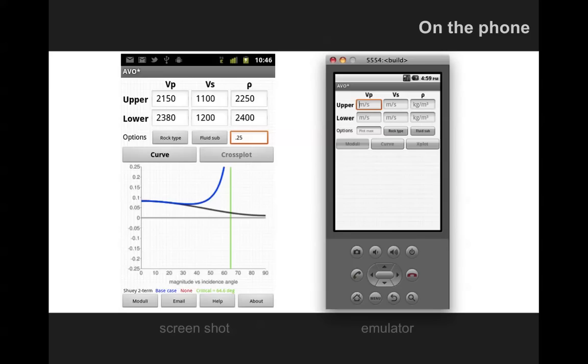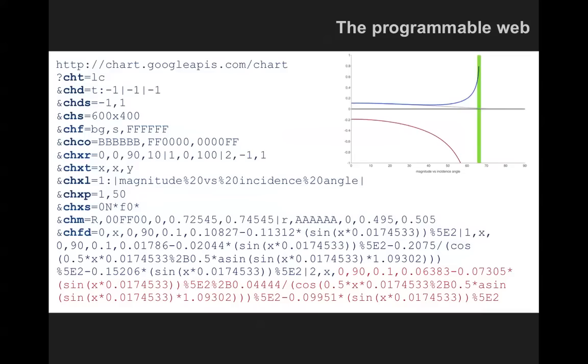Here's another of our apps, AVO, takes some rock properties, and it makes a plot of the reflectivity with offset. It's a pretty simple little app, but drawing the graph was tricky for us. We didn't know how to do that, and it turned out that we actually didn't need to do it because Google have this API or application programming interface for drawing graphs.